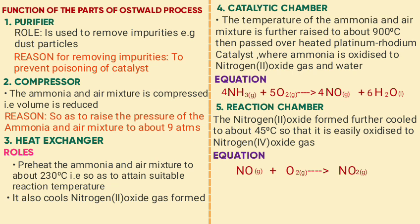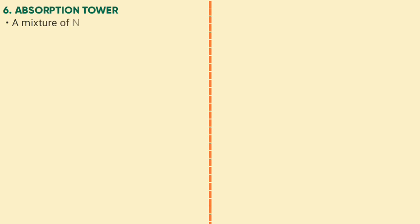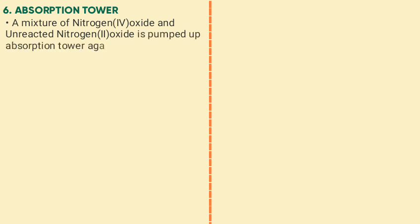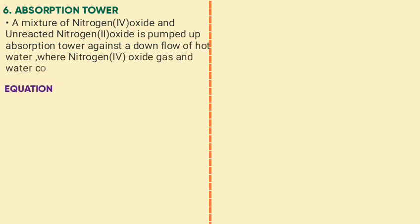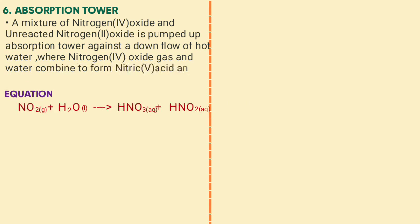Balancing the reaction chamber equation: 2NO + O2 → 2NO2. The last part is the absorption tower, where a mixture of nitrogen dioxide and nitrogen monoxide is passed up the absorption tower against a downflow of hot water, where nitrogen dioxide and water form nitric acid (HNO3) and nitrous acid (HNO2).